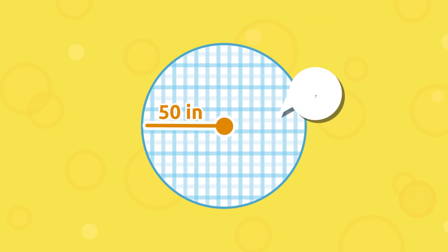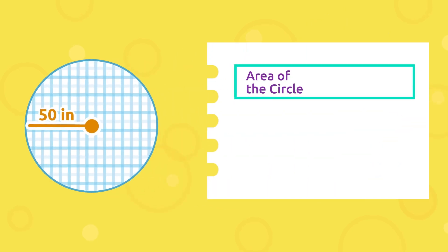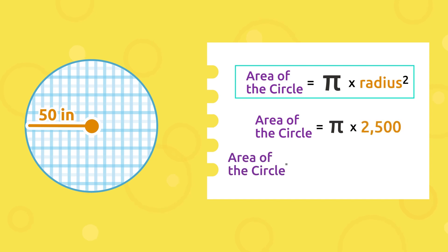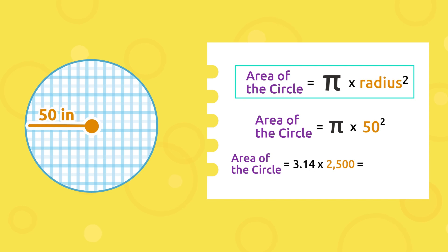To find out, we calculate the area of this round table. Remember that we should square the radius — multiply it by itself — and then multiply the result by pi. 50 squared equals 2,500, and 2,500 multiplied by 3.14 is 7,850.